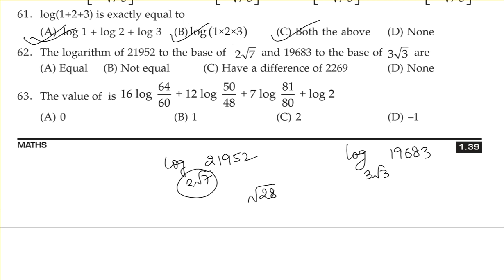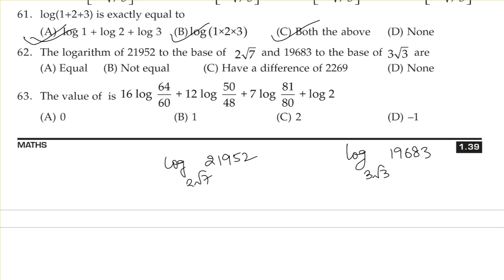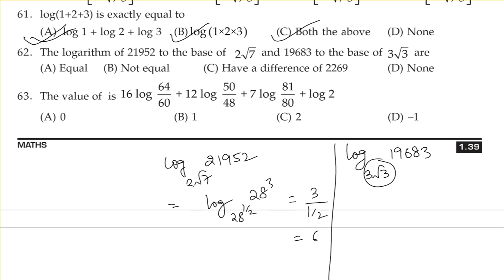2√7 is √28, that is 28 to the power 1/2. And 21952 is basically 28 cubed. So we have log(28³) to the base 28^(1/2), which gives us 3 ÷ (1/2) = 6. Similarly, 3√3 is √27 = 27^(1/2), and 919683 is 27 cubed, so again 3 ÷ (1/2) = 6. So these two are equal.